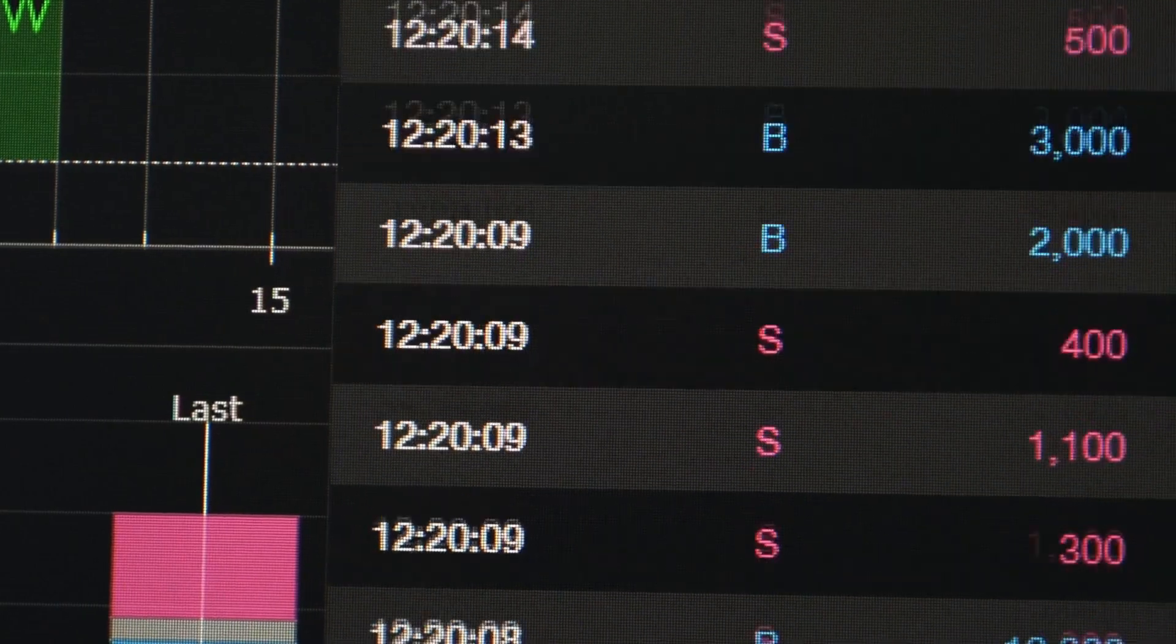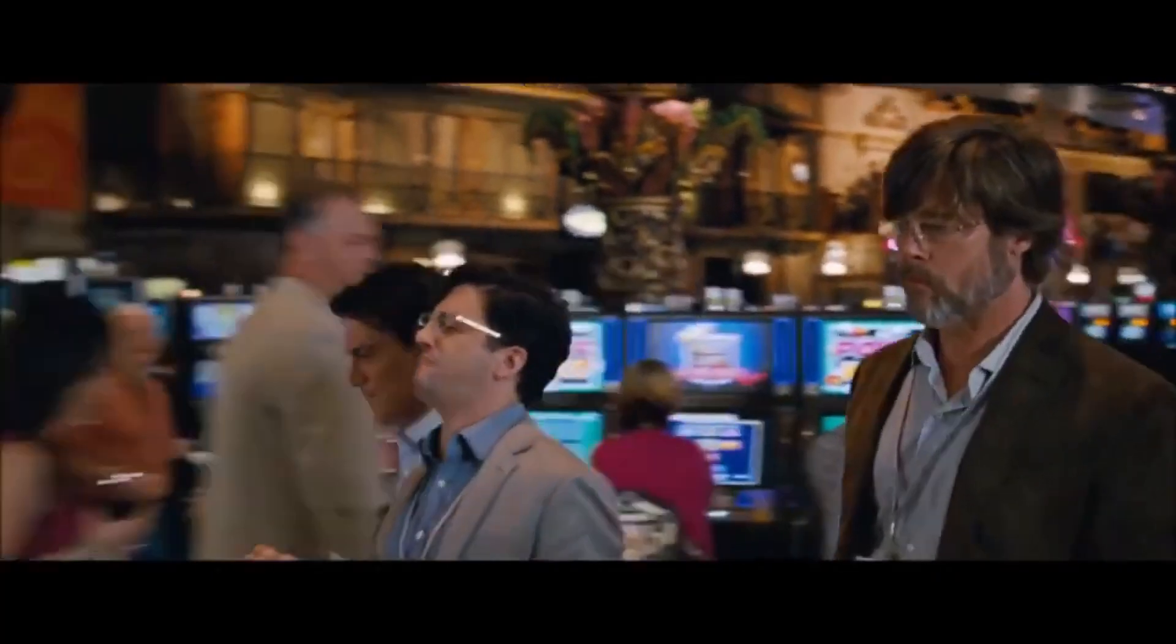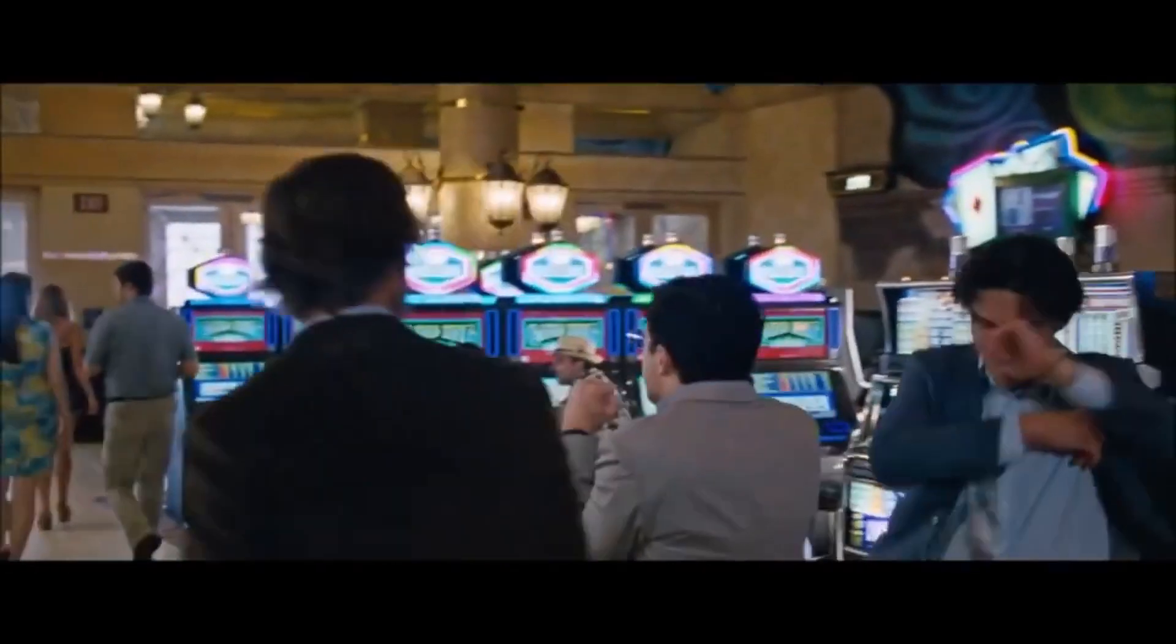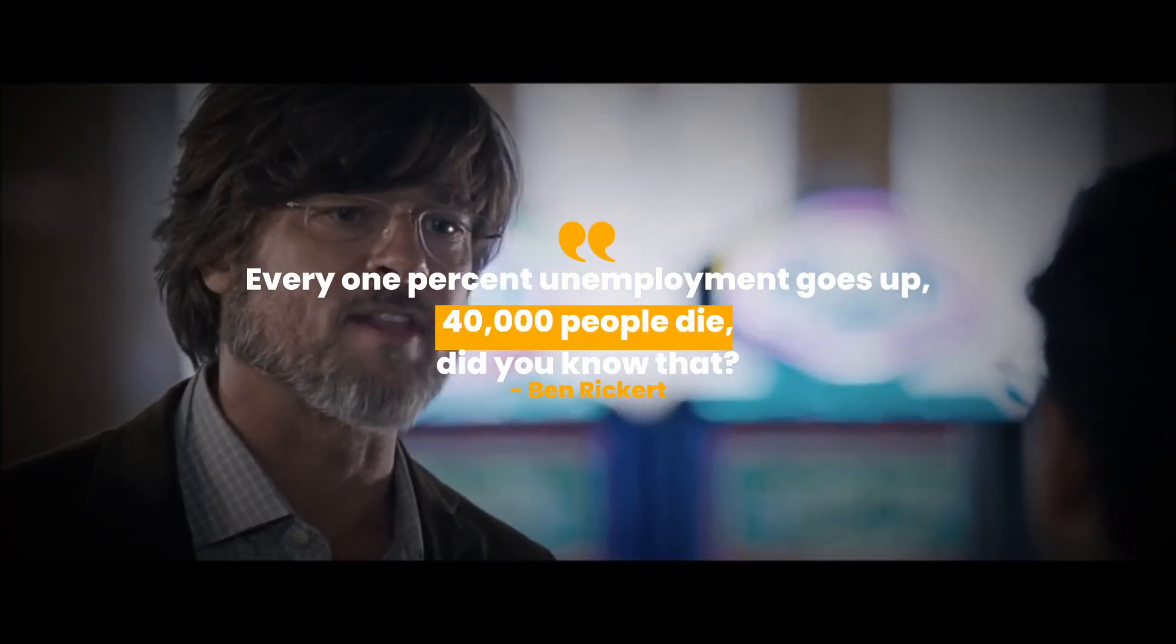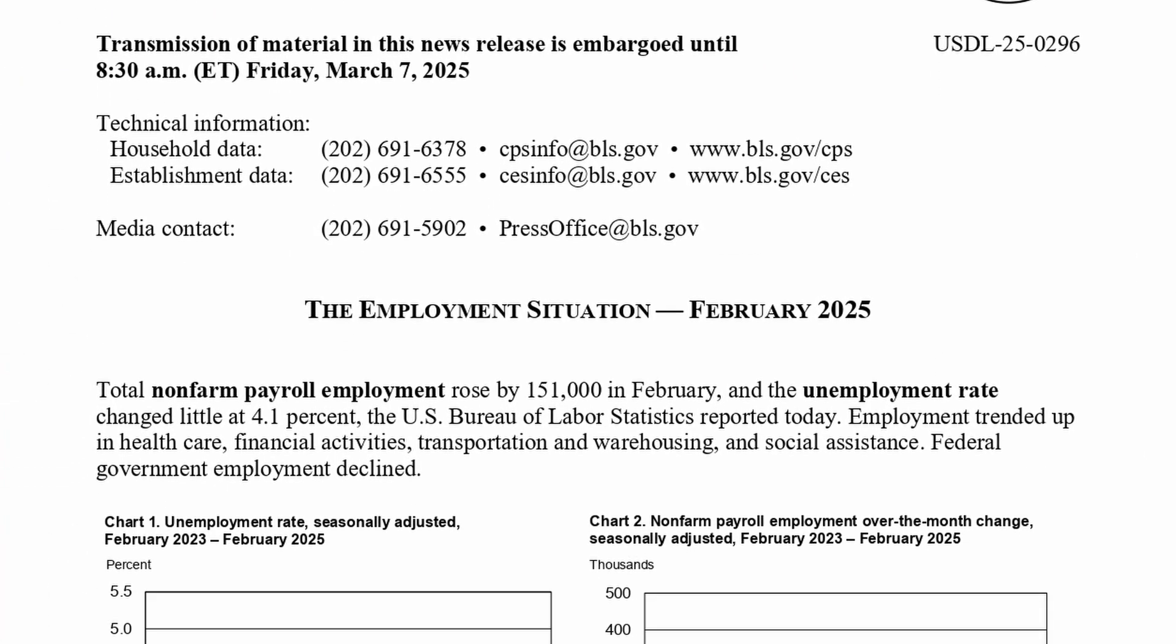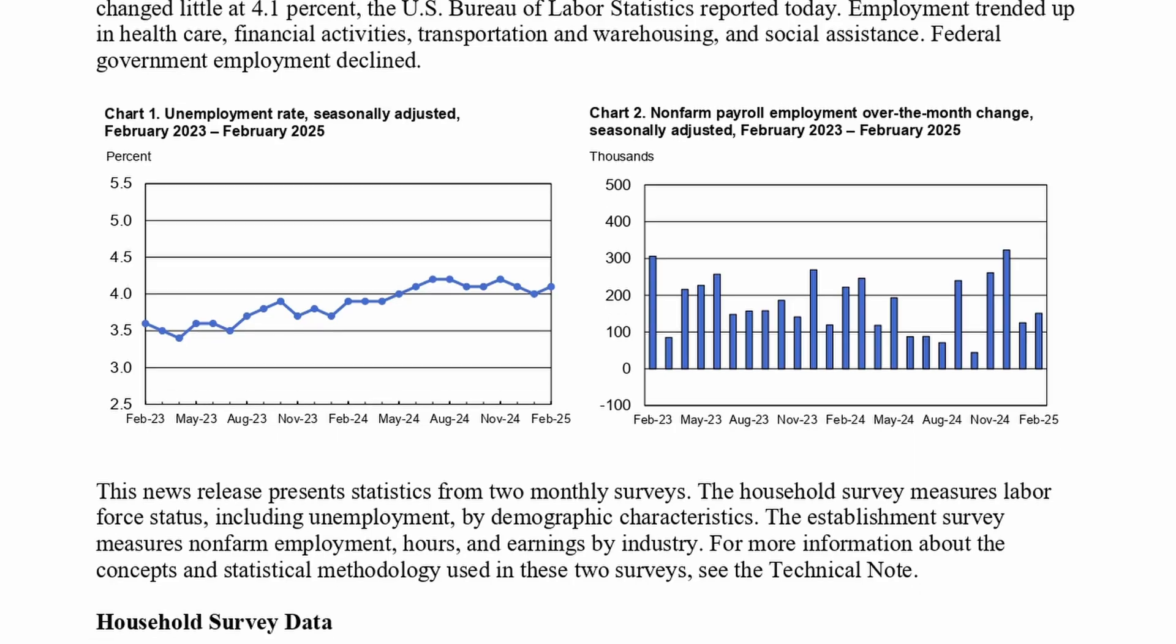Remember that scene in the Big Short, where Brad Pitt's character says, for every 1% unemployment goes up, 40,000 people die. Well, these algorithms can process and trade unemployment data before humans can even read the first line of the report.